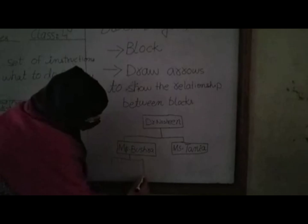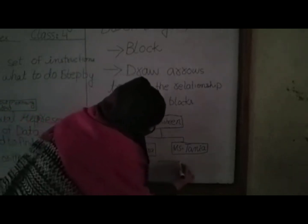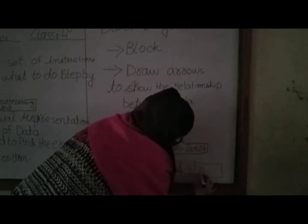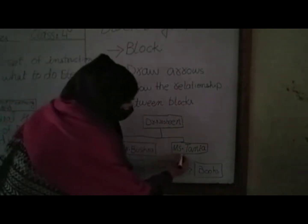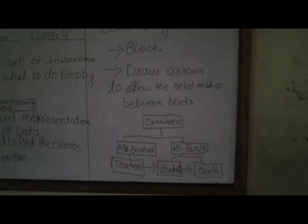All these members are linked with each other. Dr. Nashim is linked with Ms. Bushra, Ms. Tanya, teachers, students, and books. Now class, I am giving you homework: draw a block diagram. Just draw the blocks — rectangle shapes — and start linking them with each other.